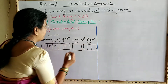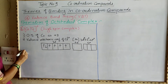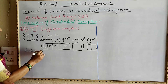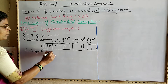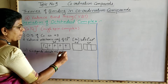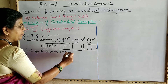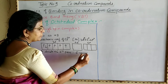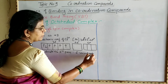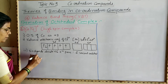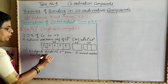Now there are 6 ligands. These 6 ligands donate 6 electron pairs, and therefore 6 vacant orbitals are required to form coordination bonds.